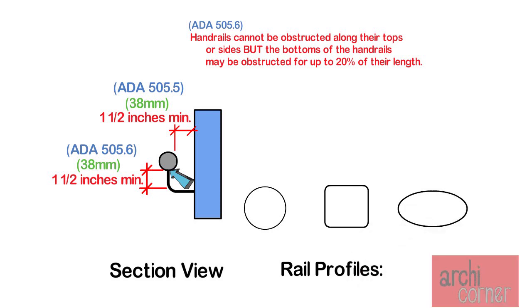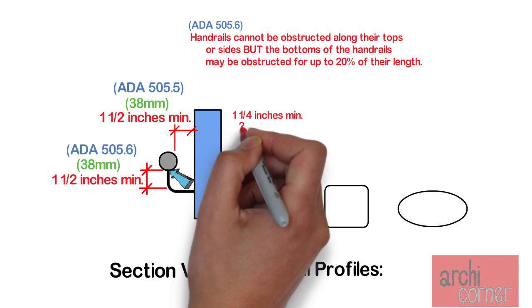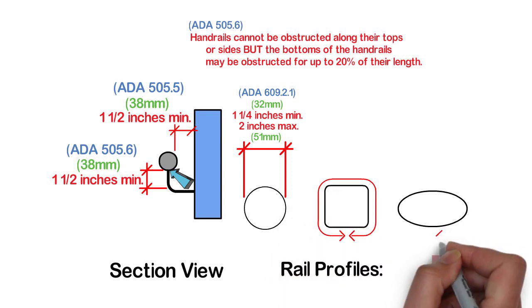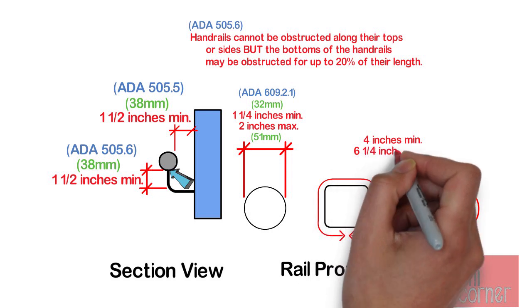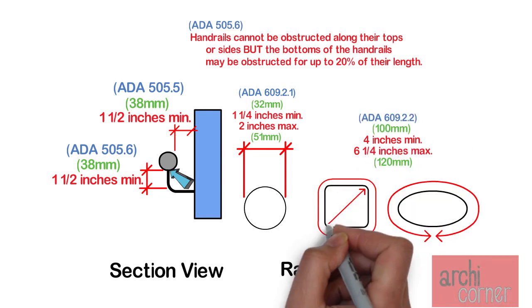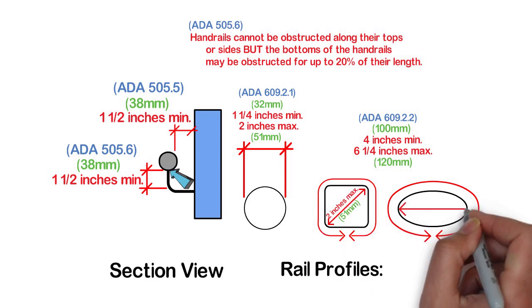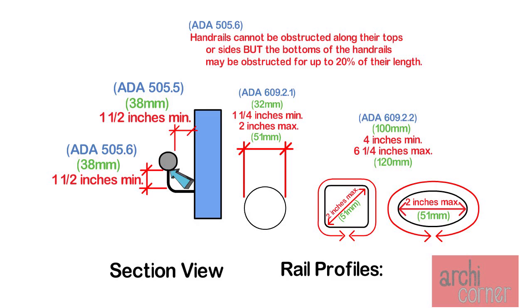Although it is very rare to see handrails that are not purely circular in cross section, note that you do in fact have options for the profile of your handrail. If it is circular, the outside diameter must be between one and a quarter inches minimum and two inches maximum. If it is not circular, there is a perimeter requirement. That perimeter must be between four inches minimum and six and a quarter inches maximum. There is also a cross section requirement. The handrail must be two inches maximum. So you can see how that can apply in different profiles as shown here.